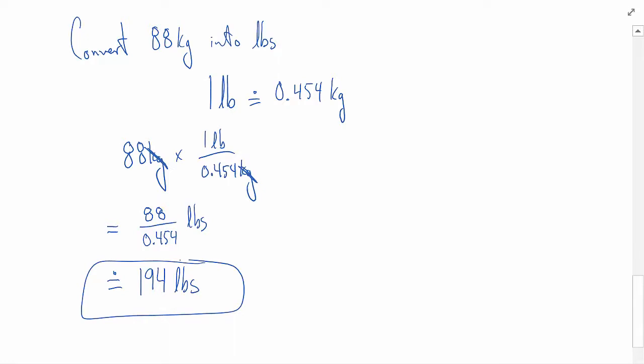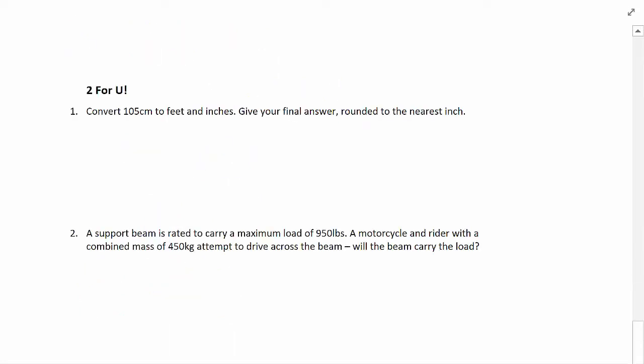That's some good converting. All right, we're coming up to the end. That's what that song means. It's time for Two for You. Convert 105 centimeters into feet and inches, rounded to the nearest inch. And a motorcycle and a rider with combined mass of 450 kilograms. I wonder if they'll make it safely across the beam. So until next time, keep your pencils sharp, and I'll see you in class.